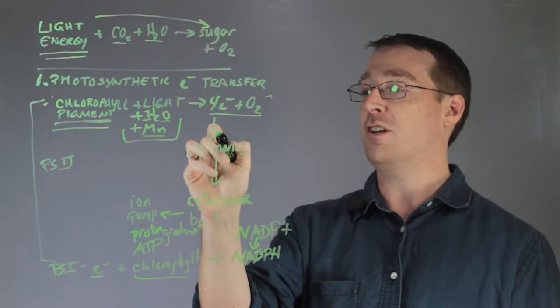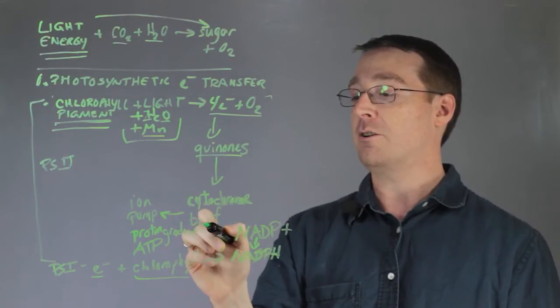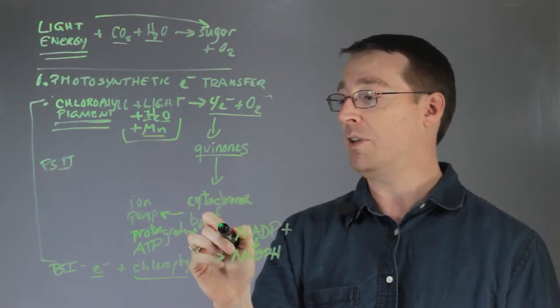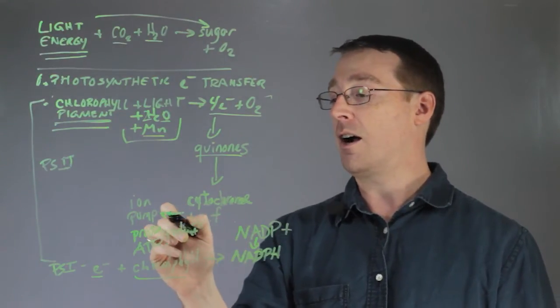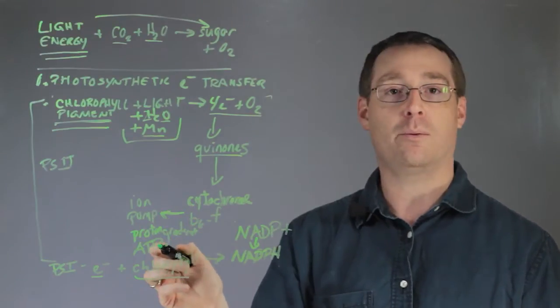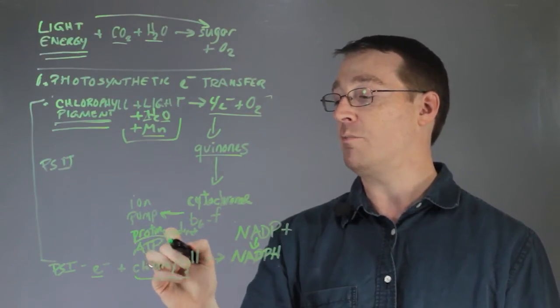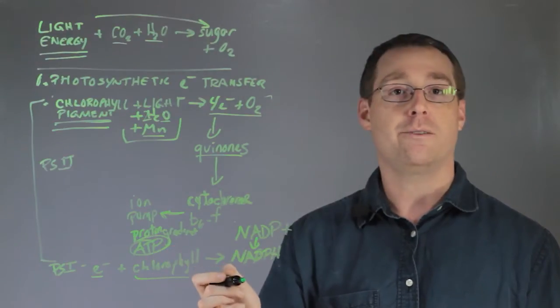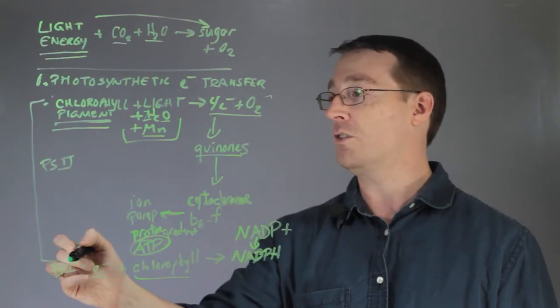The electrons transfer into quinones and through a cytochrome B6F complex, where they are used to generate an ion pump and a proton gradient, which results in the production of ATP. This all occurs in photosystem 2.